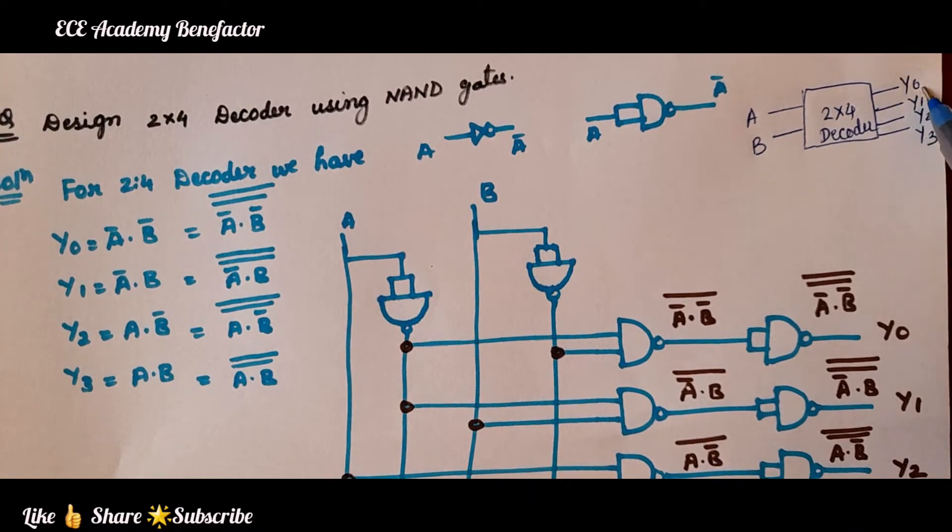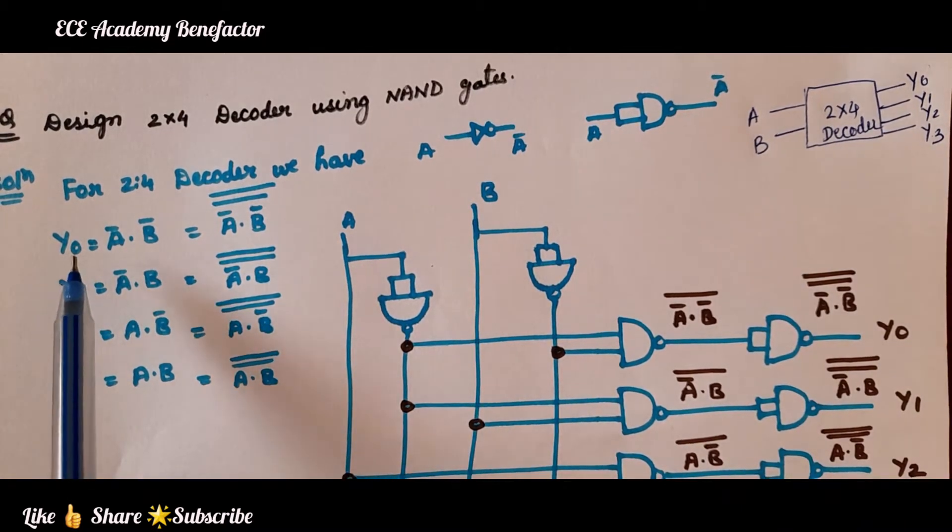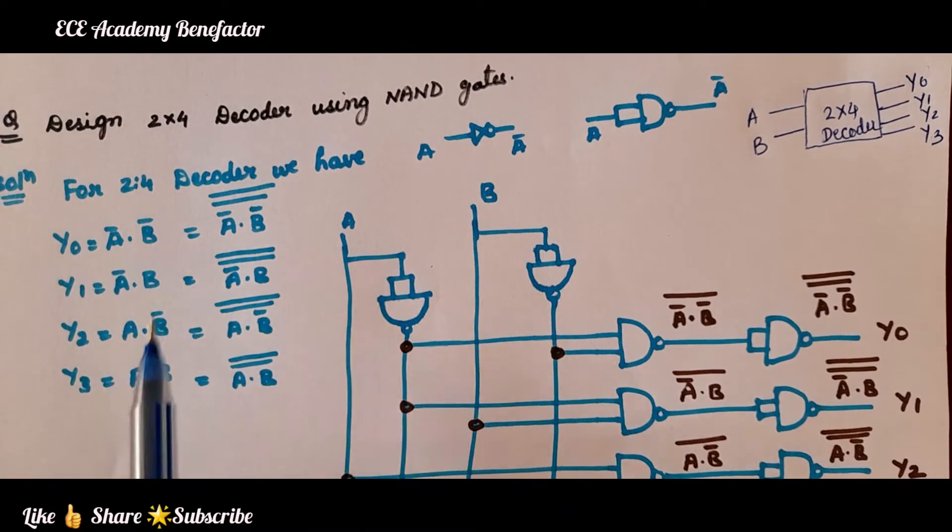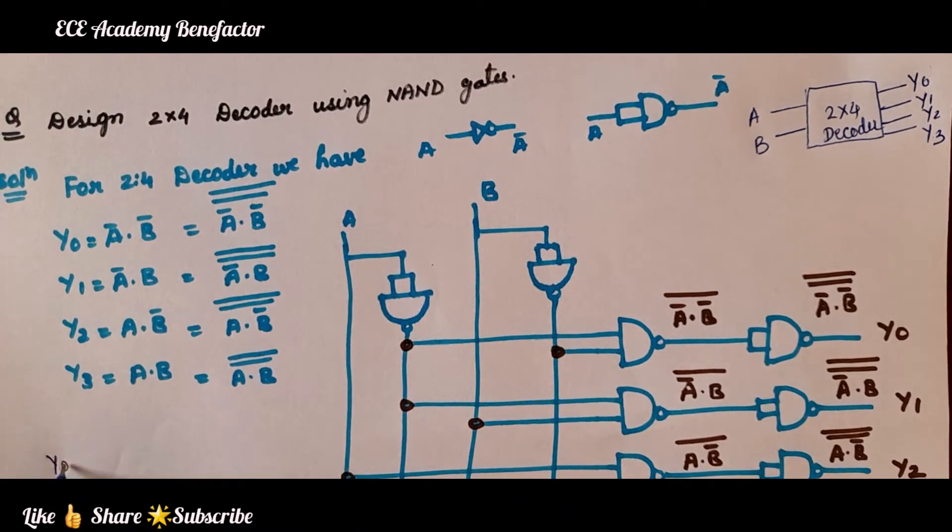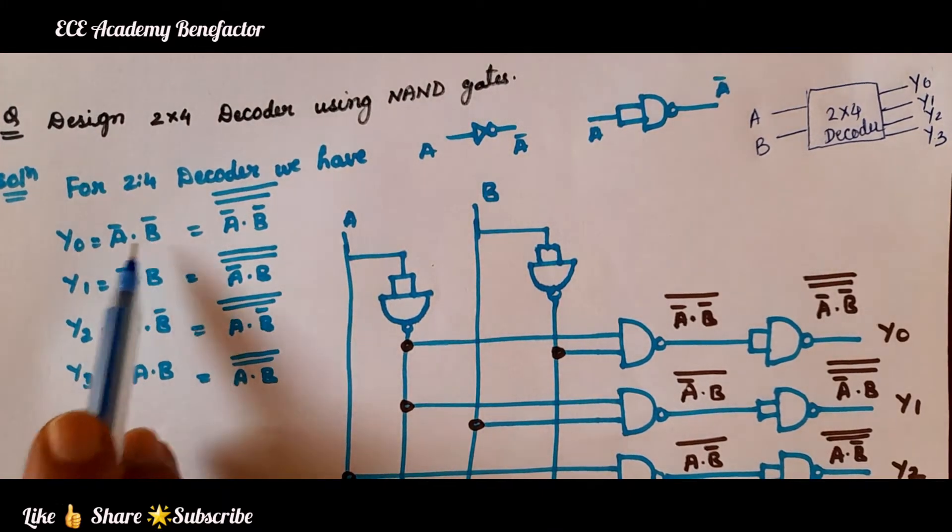We have obtained the equations of y0, y1, y2, y3. y0 equation is coming to be, what is y0? y0 is 0 0, which means A̅·B̅.